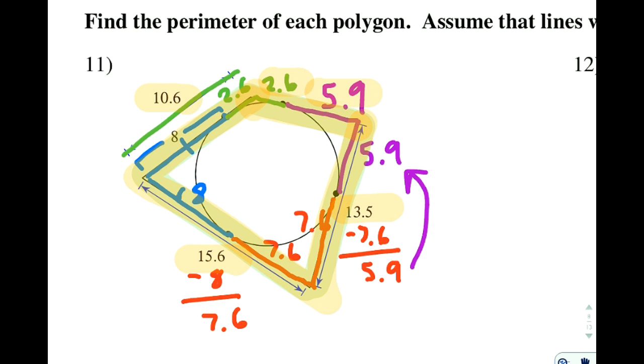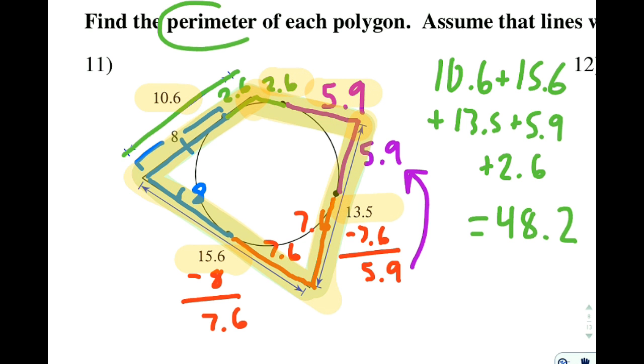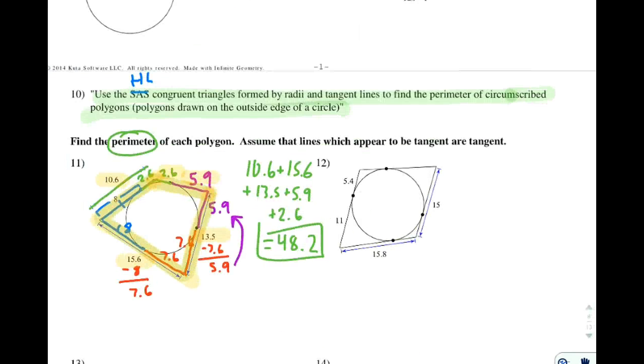So I'm going to add 10.6 plus 15.6 plus 13.5 plus 5.9 plus 2.6. And when I do that, I get 48.2. Because it asks me to find the perimeter of the polygon. So the perimeter right here is 48.2.